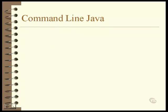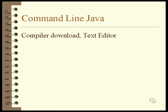If you want to write Java programs using a text editor and the command line compiler, this lesson is going to tell you what you need to do to get ready. There are only three things to consider: you need to download the compiler, decide on a text editor, and set the path variable. Once you've completed these three steps, you're ready to start writing and compiling Java programs.